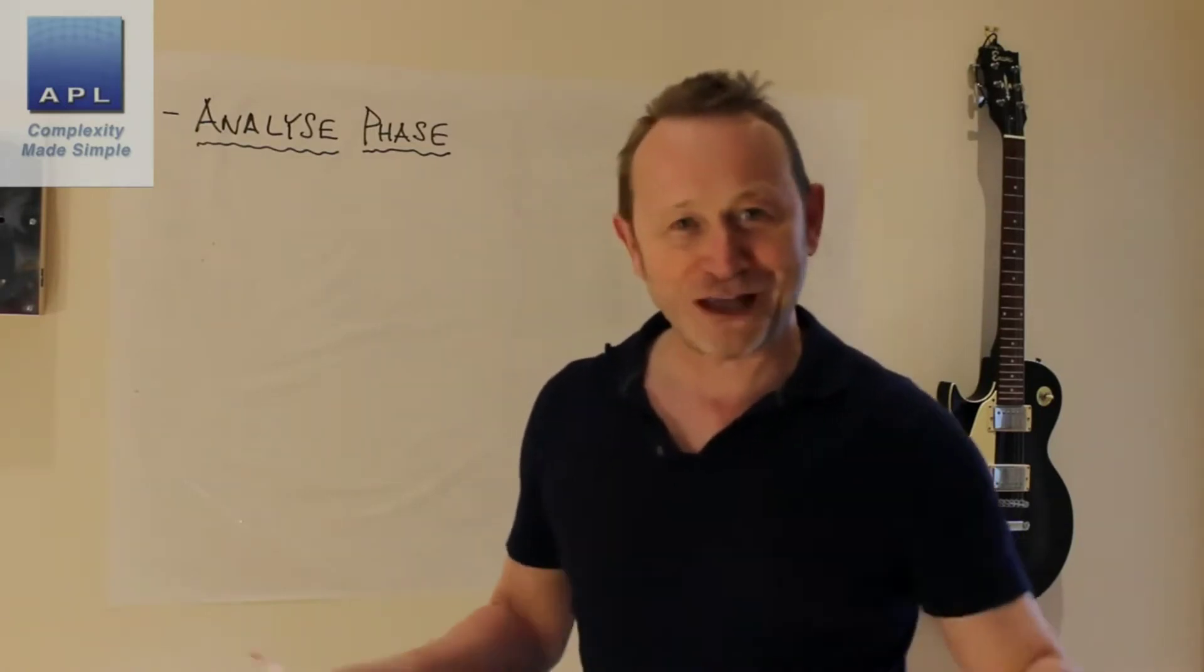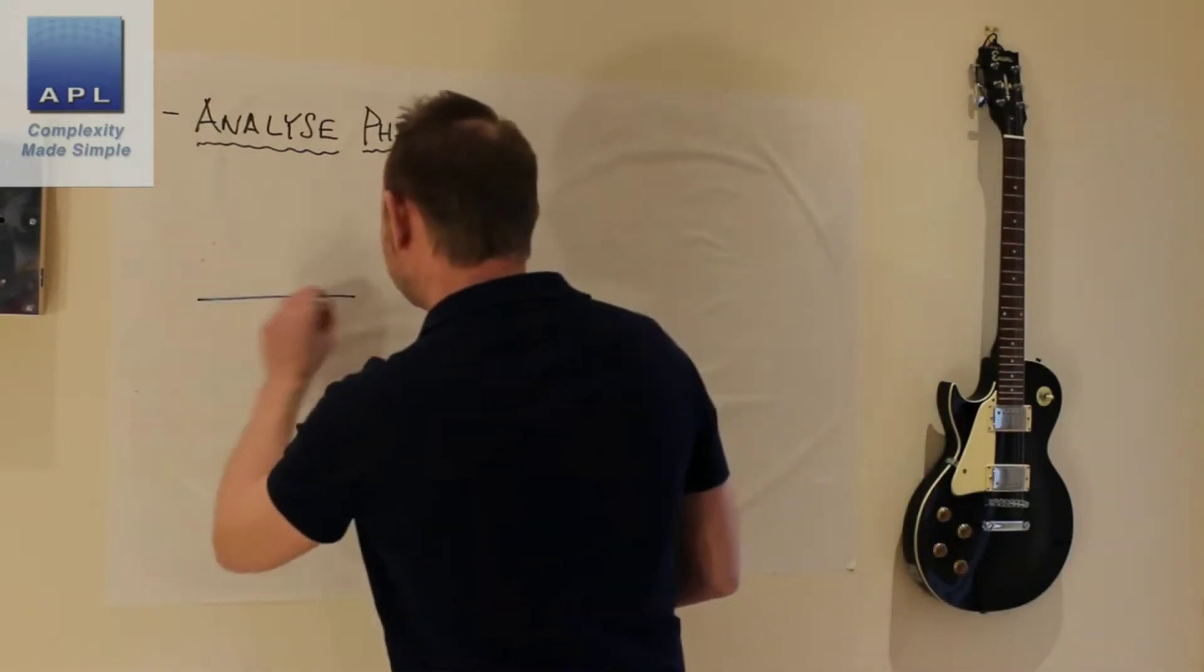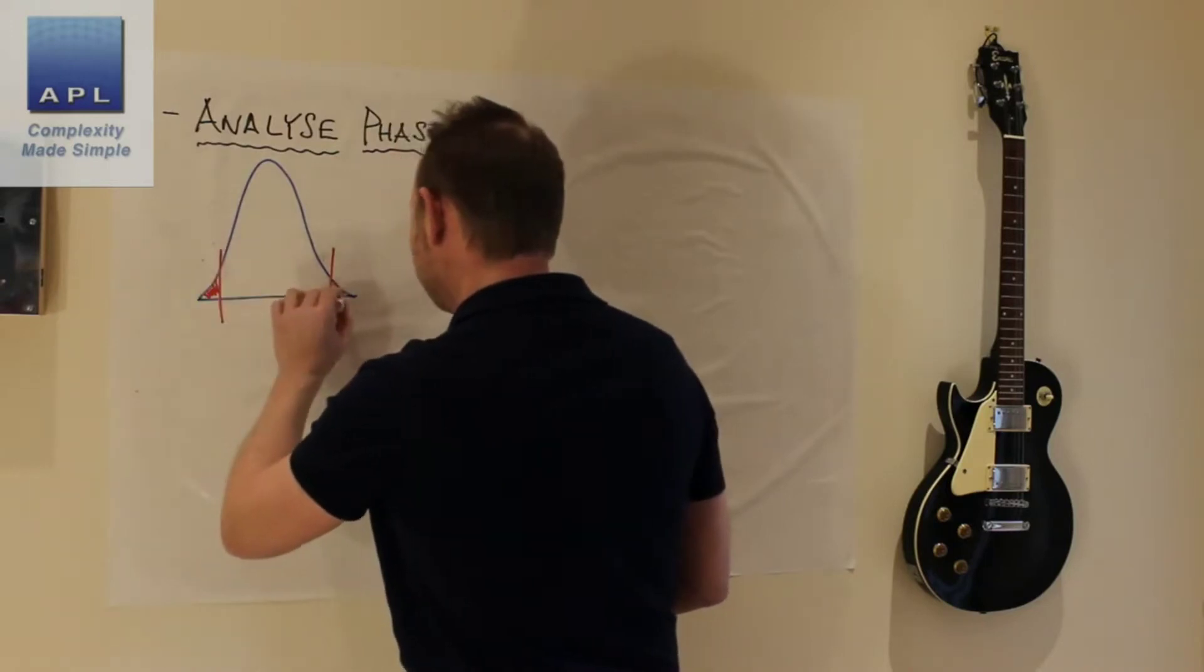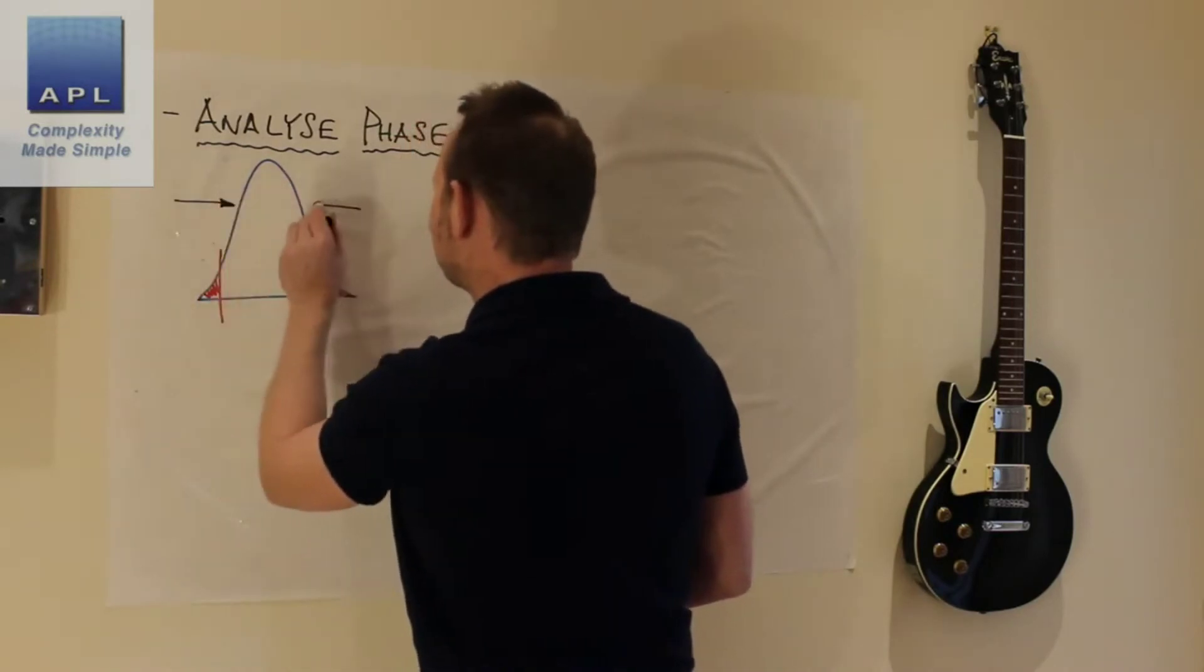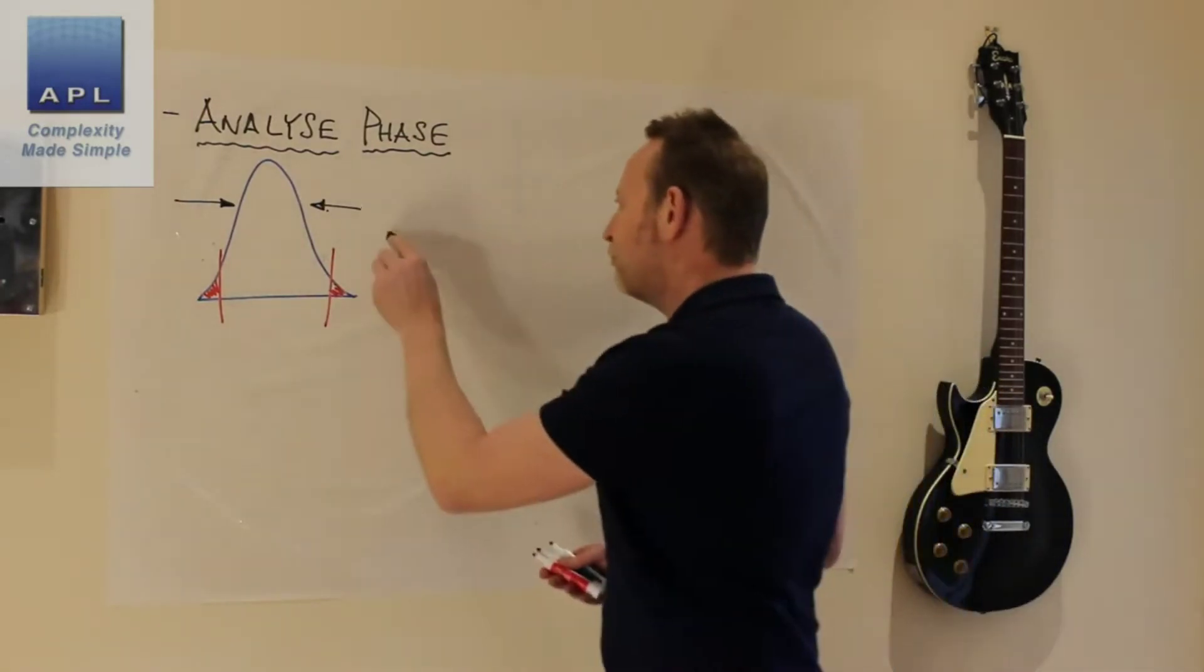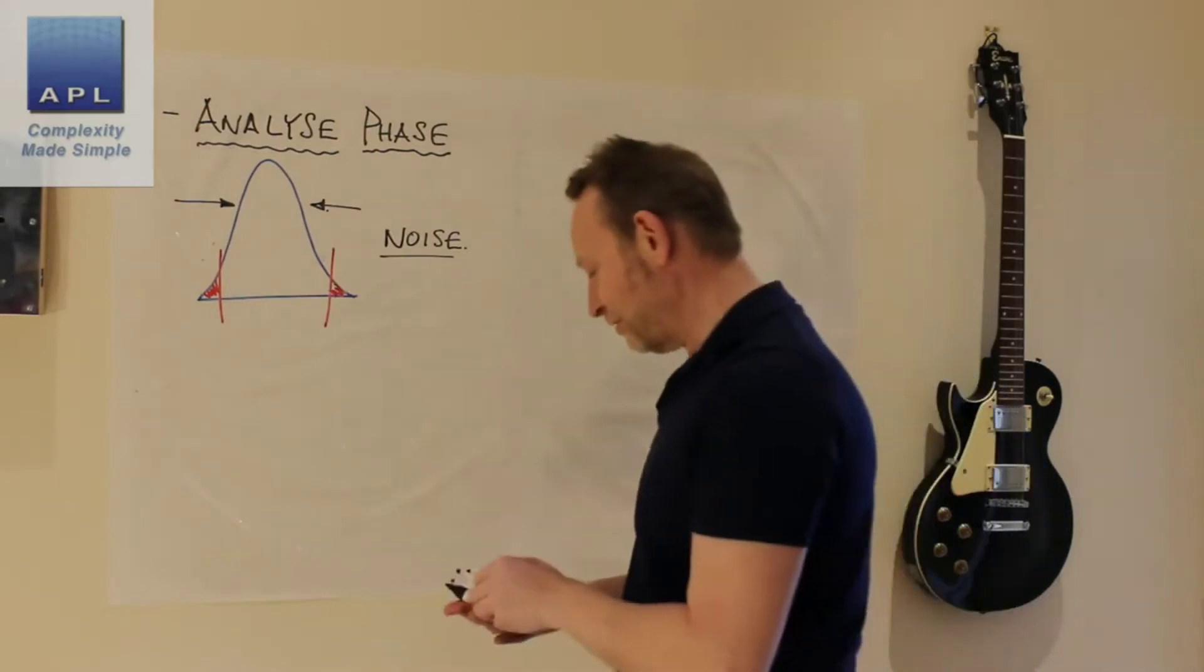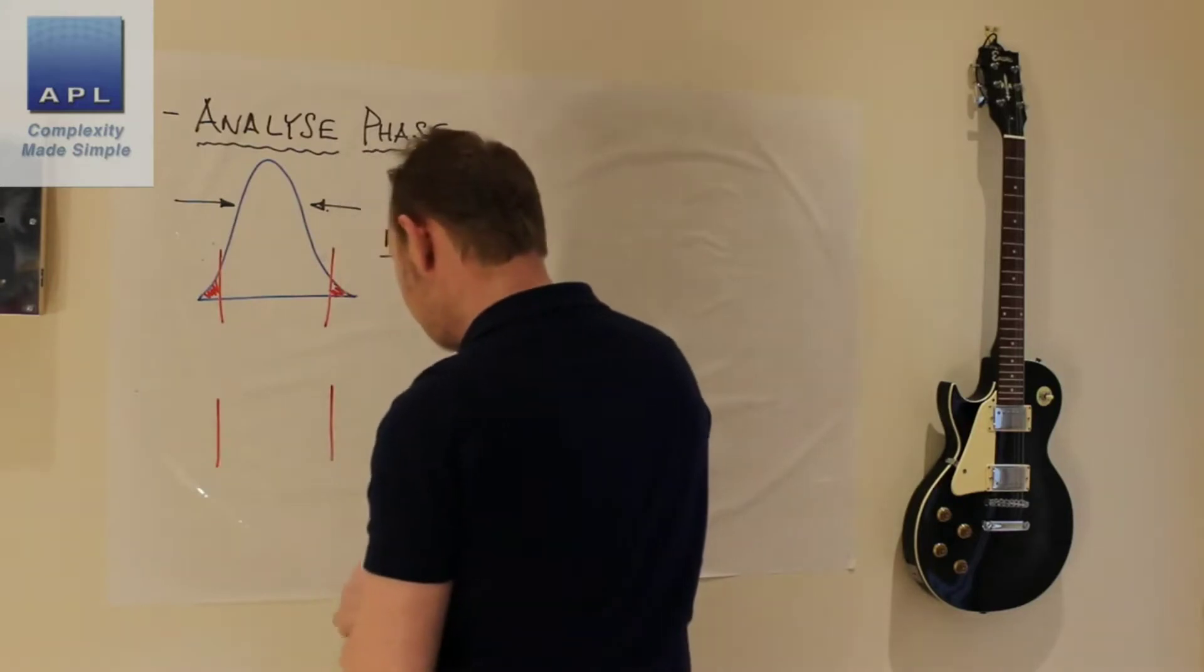There are two types of analysis depending on what state the process is in. So this is state number one: if your problem looks like this, this is a problem with noise. What you have to do to make those red tails, to make that defect rate go away, is remove the noise from your process.